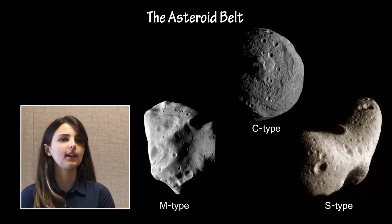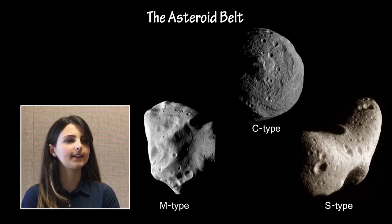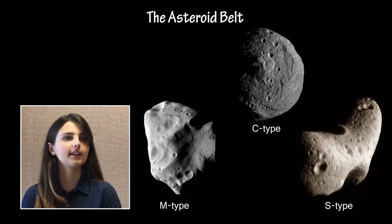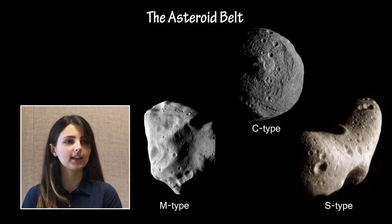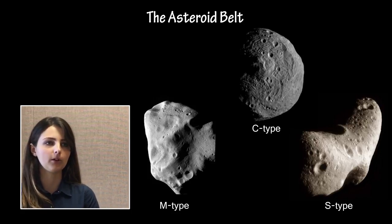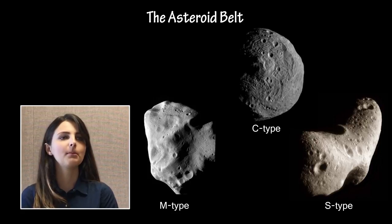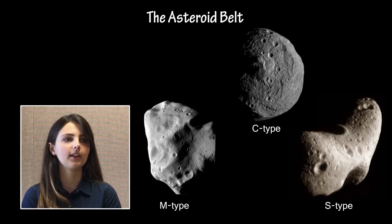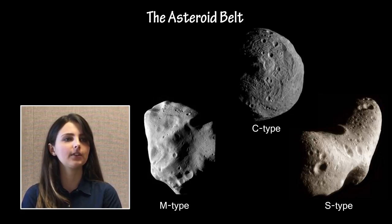There are three main types of asteroids, characterized by composition and appearance. C-type, or carbonaceous asteroids, are rich in carbon and have low albedo, meaning they are very non-reflective, and are more prevalent in the outer regions of the asteroid belt. S-type, or silicate asteroids, are composed primarily of silicates, indicating the presence of heating and re-formation after their initial formation, giving them a relatively high albedo; these are more common toward the inside of the asteroid belt. M-type, or metallic asteroids, make up only 10% of all asteroids in the belt and are composed primarily of iron and nickel. It is unknown how M-type asteroids formed, but many believe they may be the cores of differentiated progenitor bodies that were later broken up.